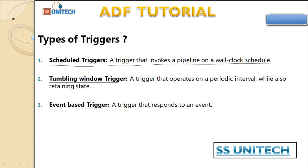The tumbling window trigger operates on a periodic interval while also retaining state. It is almost the same as the scheduled trigger but has additional features. For example, it can execute every 24 hours starting at six o'clock in the morning on a daily basis, and it also retains state between runs.